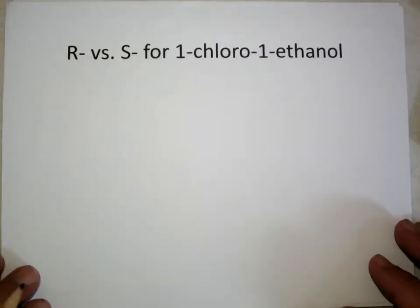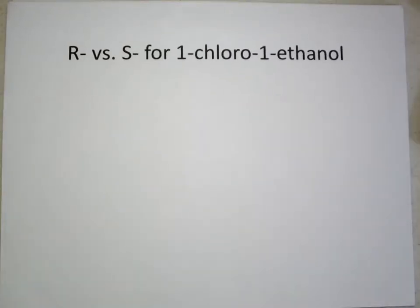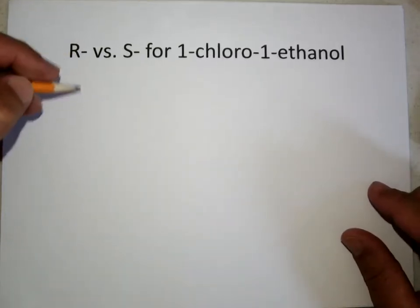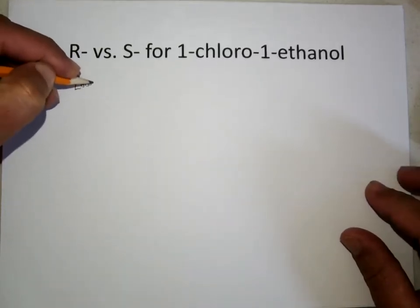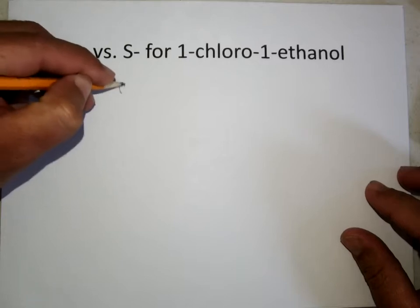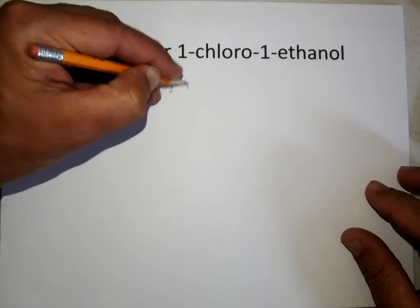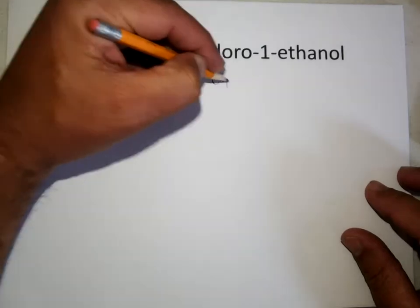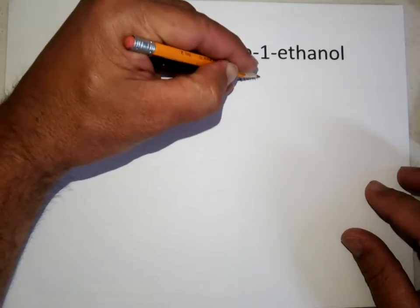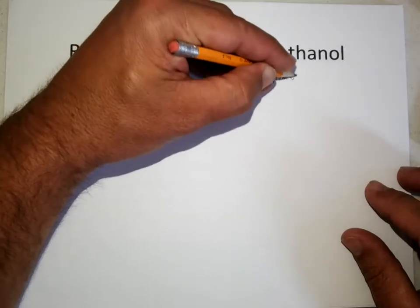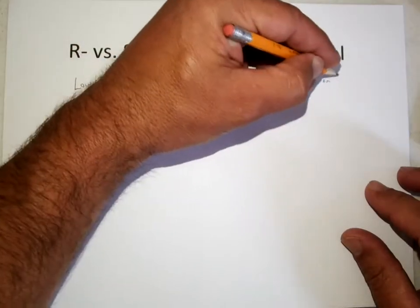So one of the first things is the naming part is R versus S for the one-chloro-one-ethanol. And the way they decided to do this was they put the lowest priority group by atomic number in back.